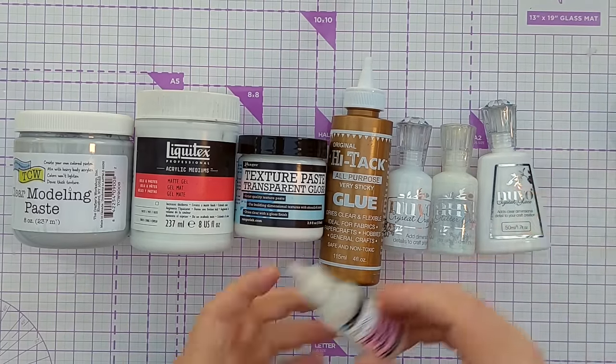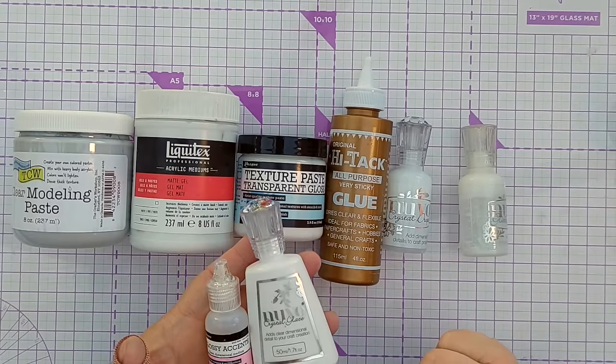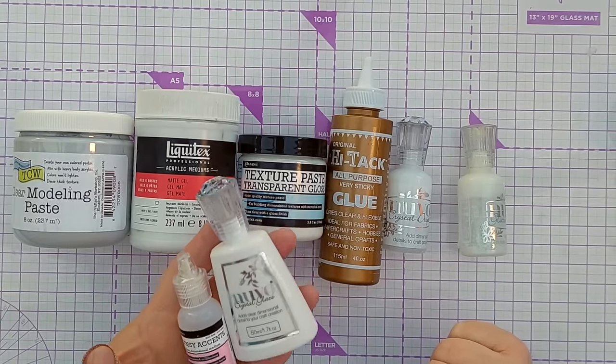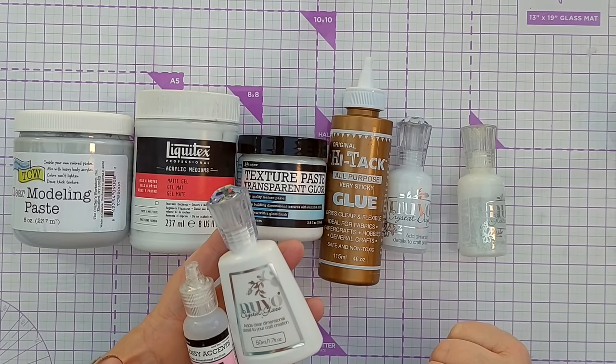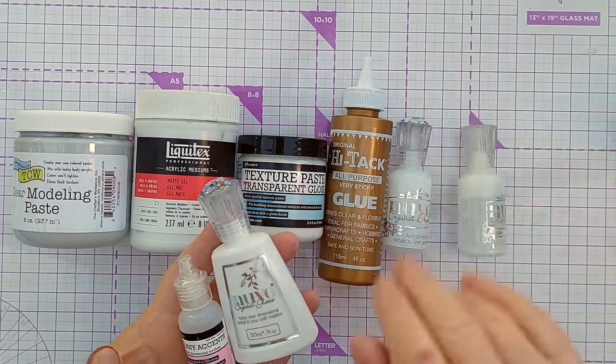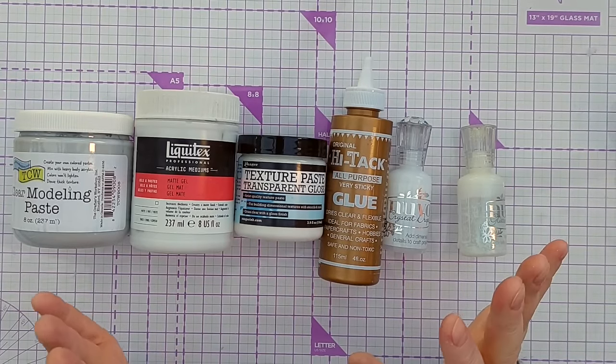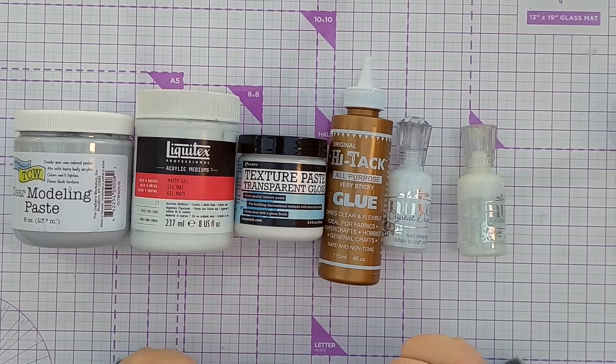Now Glossy Accents and Nuvo Crystal Glaze are very runny, so they didn't work when I wanted to put my glitter paste through a stencil because it oozed underneath. We'll set those to one side—you can use them, but they're not great with stencils.